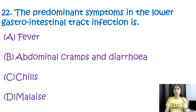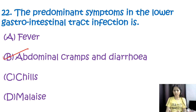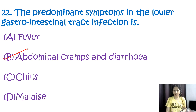Question number twenty-two: the predominant symptoms in lower gastrointestinal tract infection are — options are fever, abdominal cramp and diarrhea, chills, or malaise. The correct option is B. Lower gastrointestinal tract infection typically manifests with symptoms such as abdominal cramps and diarrhea. These symptoms are often accompanied by nausea, vomiting, or sometimes fever, while abdominal cramp and diarrhea remain the hallmark symptoms. The correct option is B.